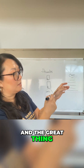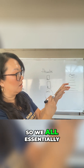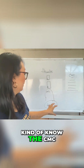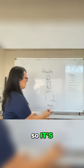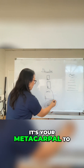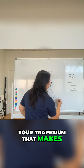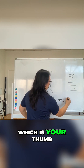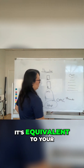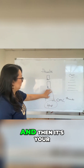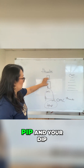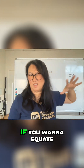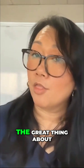The great thing about the thumb — we all essentially kind of know the CMC. So it's your metacarpal to your trapezium that makes up your CMC, which is your thumb. It's equivalent to your thumb MP, and then your PIP and your DIP, kind of like if you want to equate it to your fingers.